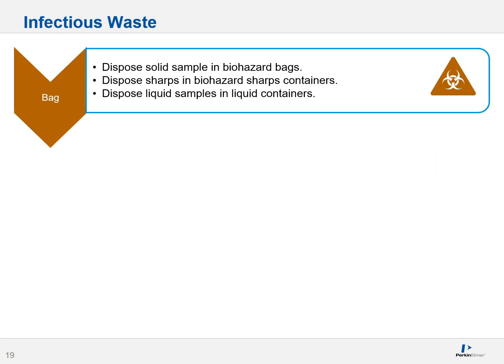When dealing with infectious waste, step one: dispose of solid samples in biohazard bags — usually red or orange bags that can be commercially purchased. Dispose of sharps in biohazard sharps containers; please don't shove them into a bag as they will damage it and spill out. Liquid samples are disposed of in appropriate liquid containers — you wouldn't toss liquid into a bag.